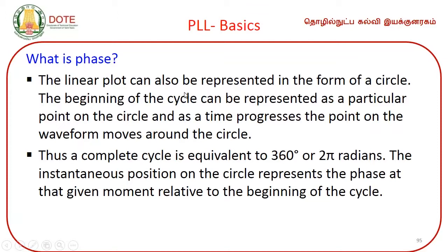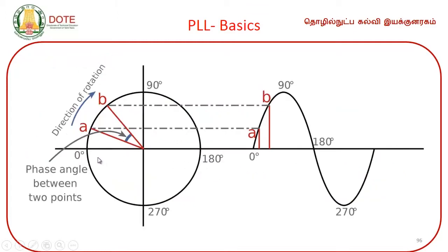What is phase? The linear plot of a sinusoidal wave can also be represented in the form of a circle. The beginning of the cycle can be represented as a particular point on the circle, and as time progresses, the point on the waveform moves around the circle. A complete cycle equals 360 degrees, or two pi radians. Draw a circle — starting from 0 degrees, 90, 180, 270, and back to 360 degrees, which is again 0 degrees. In terms of radians: pi/2, pi, 3pi/2, and 2 pi.